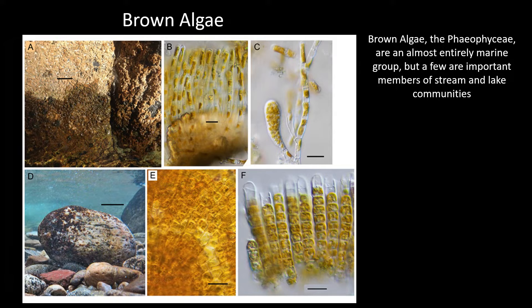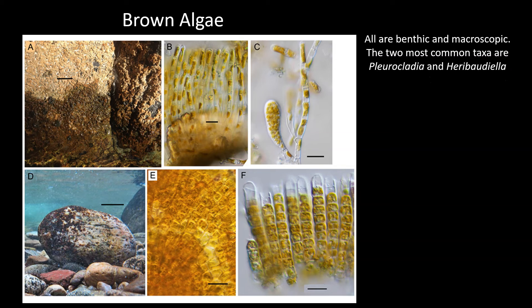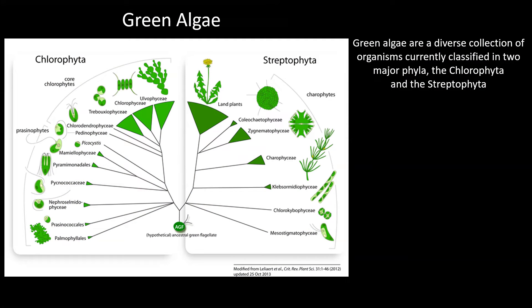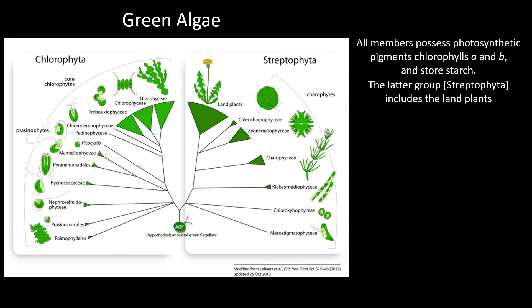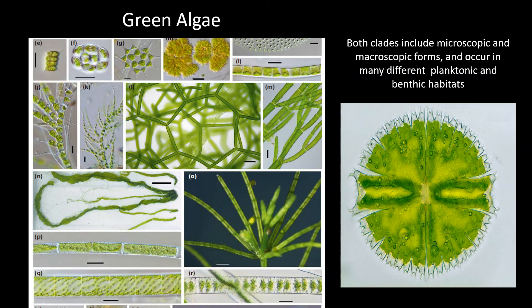Brown algae, the Phaeophyceae, are an almost entirely marine group, but a few are important members of stream and lake communities. All are benthic and macroscopic. The two most common taxa are Pleurocladia and Heribaudiella. Green algae are a diverse collection of organisms, currently classified in two major phyla, the Chlorophyta and the Streptophyta. All members possess photosynthetic pigments chlorophylls A and B and store starch. The latter group includes the land plants. Both clades include microscopic and macroscopic forms and occur in many different planktonic and benthic habitats.